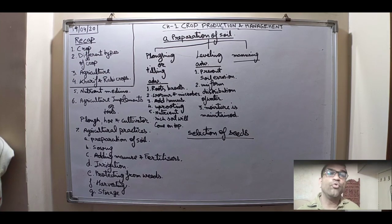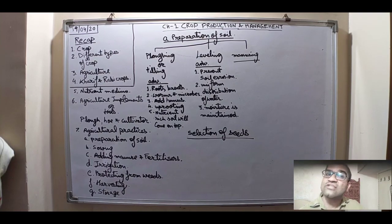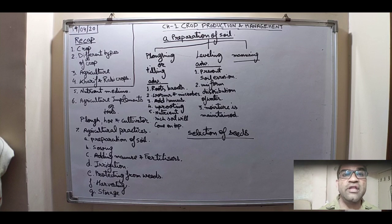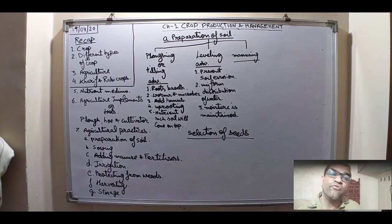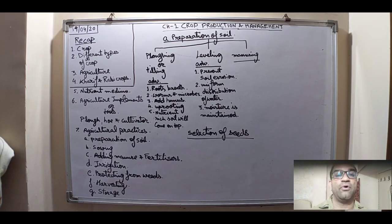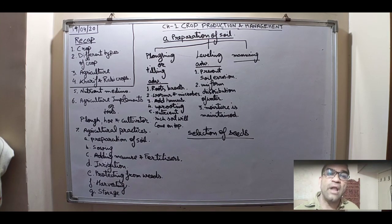The fourth advantage: while loosening the soil through plowing, we uproot the previous plant roots inside the soil which we cannot see. Those roots are then decomposed by worms and microbes, making the soil more fertile. Also, the nutrients inside the soil come to the top, where plants can use them.